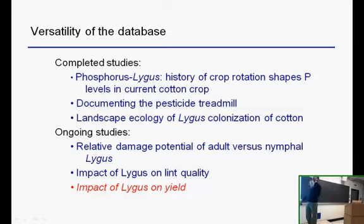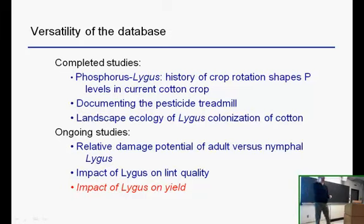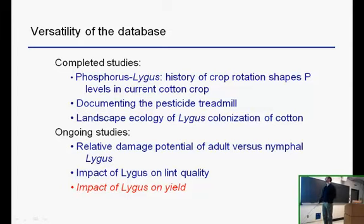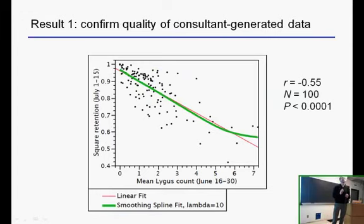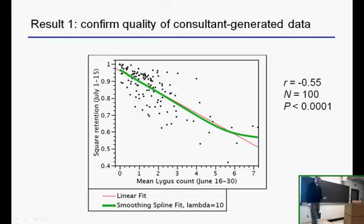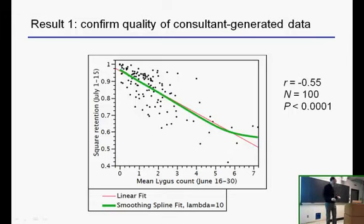The database we ended up with has been quite versatile. It played a role in unraveling the phosphorus-Lygus story. Kevin Gross did a nice project documenting the pesticide treadmill in this system. Francis Simikoff used a chunk of this data to analyze the landscape ecology of Lygus and the effects of neighboring crops. We've done quite a bit with this and are continuing to work with it. But let me focus now on the effects of Lygus. The first thing we had to do was convince skeptics that the basic quality of the data was sound. We did that by looking at the relationship between Lygus numbers and square retention — we expect a strong negative relationship, and happily we do see a very strong negative correlation any way we slice the data. That was reassuring.